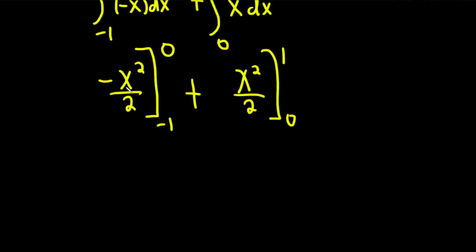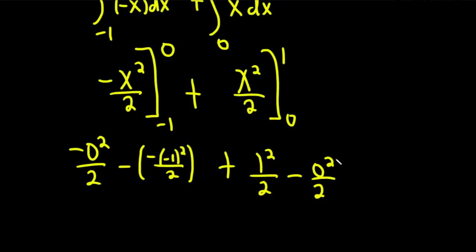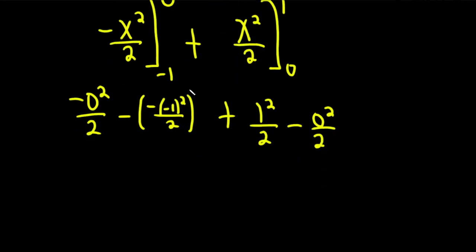And you plug in the top number first, so it'll be negative 0 squared over 2, minus parentheses, oh, this is negative, and then negative 1 squared over 2. A lot of negatives there. And plus 1 squared over 2, minus 0 squared over 2. And, you know, you don't have to write all the steps down, but I thought I'll write them all down. This is going to be 0. Let's think about what's happening here, all kinds of negative signs. So this one here is going to be a positive 1, because it's negative 1 squared. But then there's two negatives here, that's positive. So this is just going to be plus 1 half, and plus 1 half. So we get 1.